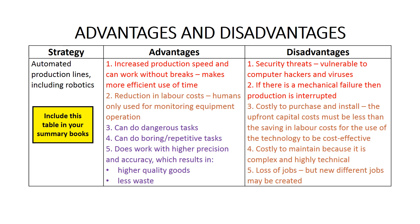In addition, automated production lines and robotics have the advantage of being able to perform dangerous tasks that might injure workers, as well as boring or repetitive tasks that workers don't want to do. Finally, because they generally operate with higher precision and accuracy than humans, they can produce higher quality goods with less wastage of inputs.